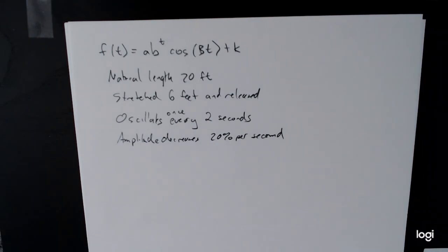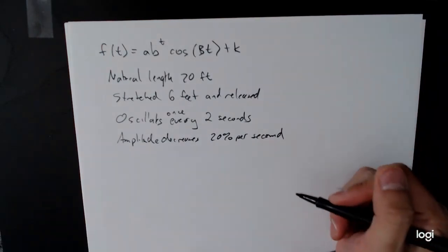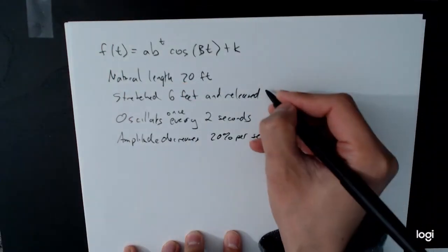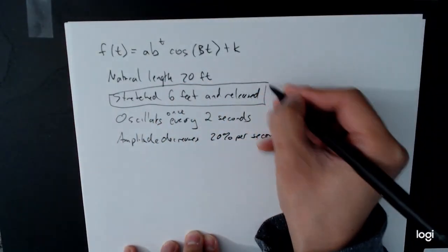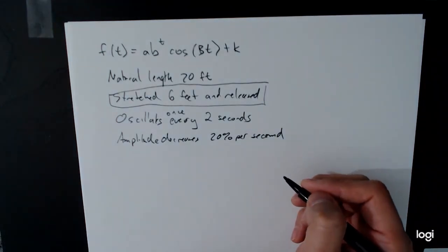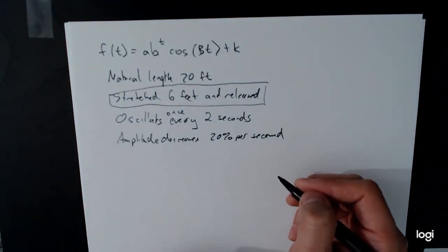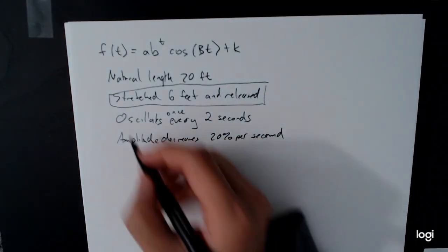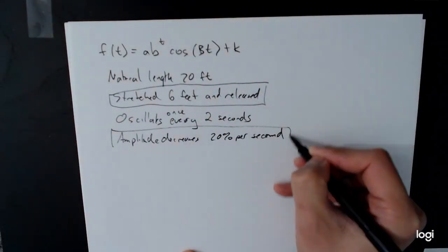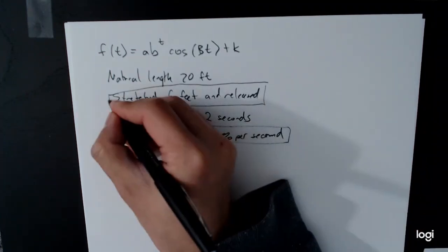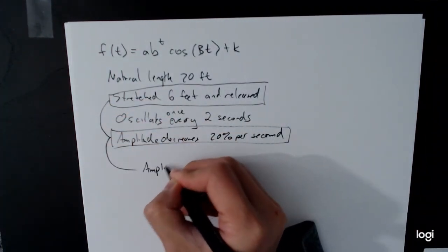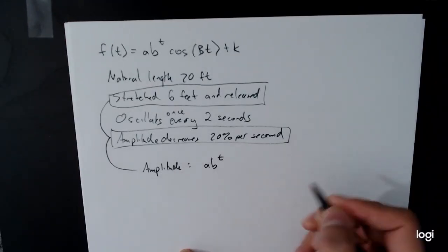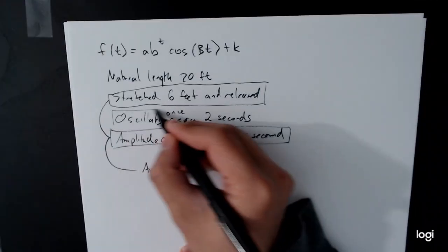Now each of these bits of information help feed us, help give us information to feed into our model. You might recognize here that the stretch 6 feet and released. This is some sort of our initial, this is our initial condition that affects our exponential term up here. Same thing with this, the amplitude decreasing 20% per second. So these are both related to the amplitude. In this case, b, a, b to the t.